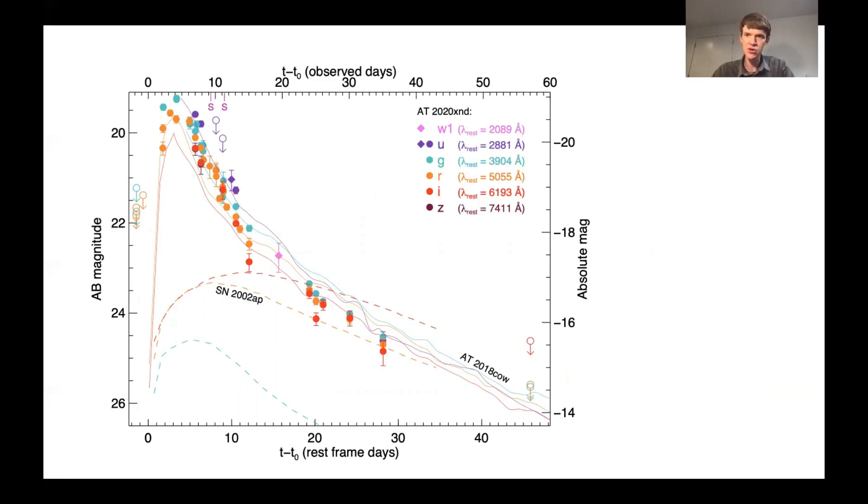The fast fading, the high temperature shown by the blue color at late times, and the lack of radioactive nucleosynthesis are all common features between the cow and this transient as well.